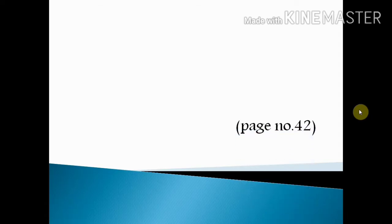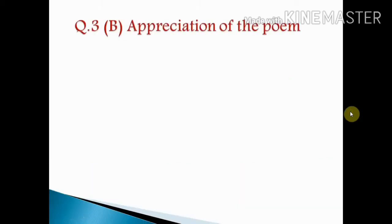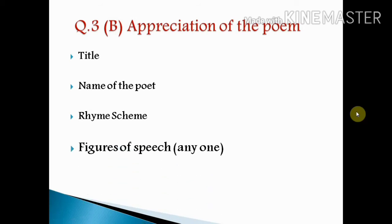Open your books and look at page number 42. Here comes the poem on page number 42: poem 2.1, 'You Start Dying Slowly.' Today we will appreciate this poem with the help of the points given in question number 3b — appreciation of the poem. The given points are: title, name of the poet, and rhyme scheme of the poem.